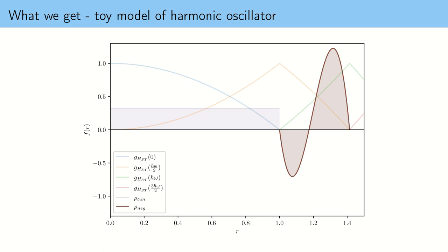The brown function represents a state of our theory, and the interesting aspect of this state is that it has a negative pseudo probability density — you can see that this function is negative. This is important because it shows that there are equivalents of negative Wigner functions in our toy model. One can also see that this state is an eigenstate of energy.